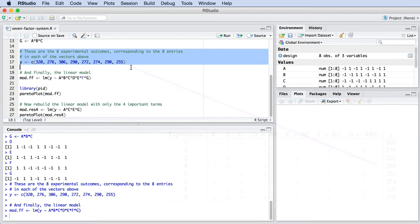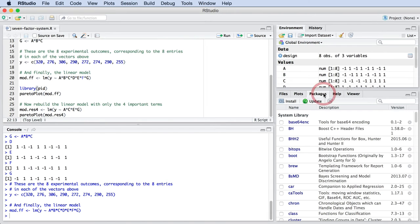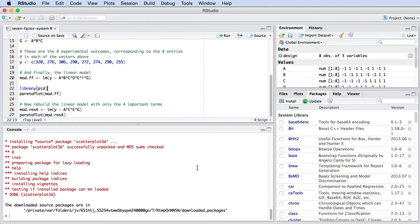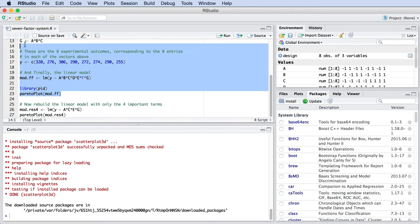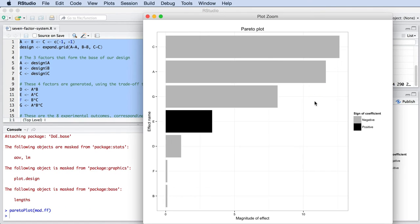When you are ready to visualize your linear model, load the PID package using the library command. You would have installed this package if you had been following prior videos. I will quickly note that our packages are frequently updated. You should check for updates regularly, as demonstrated here. So use the Pareto plot command, and let's examine the output.